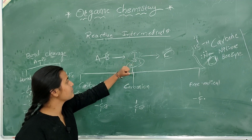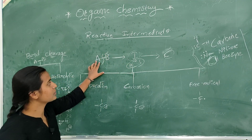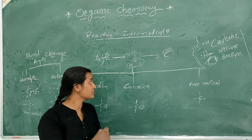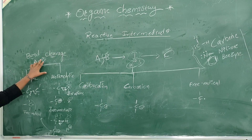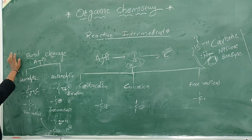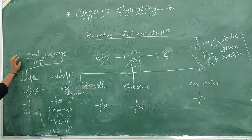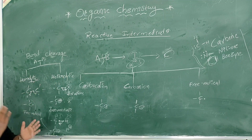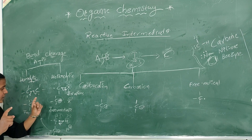There are two types of bond cleavage: homolytic cleavage and heterolytic cleavage. Lysis is the Latin word meaning breaking of the bond. Homolytic cleavage is the breaking of the bond between two similar atoms — similar atoms meaning two atoms with the same electronegativity.